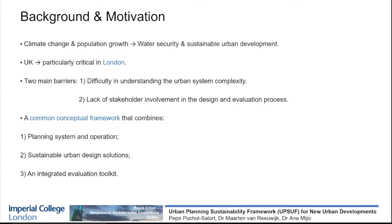What are the challenges of these urban interactions? As we can see here in figure one, urban infrastructure systems — which generally are composed of land, water services infrastructure, or housing — are part of a very complex process, and to be managed efficiently, we need to rethink it from a systems perspective. One of the methods to analyze the sustainability level is urban ecosystem services, which inform the urban infrastructure design and operation.